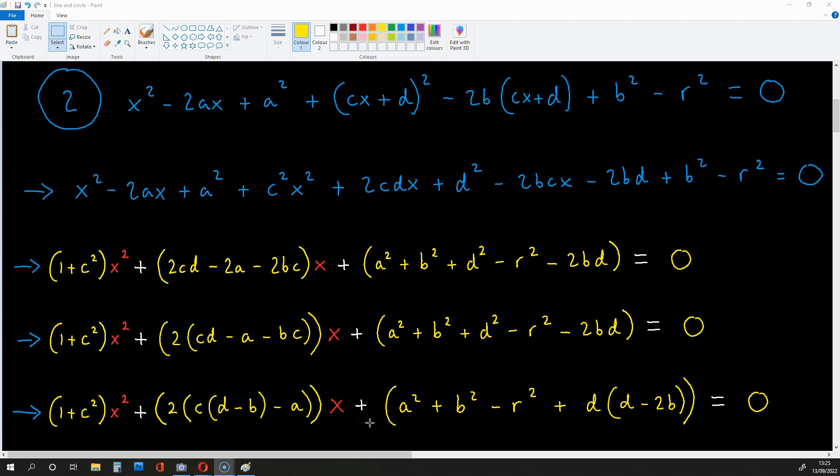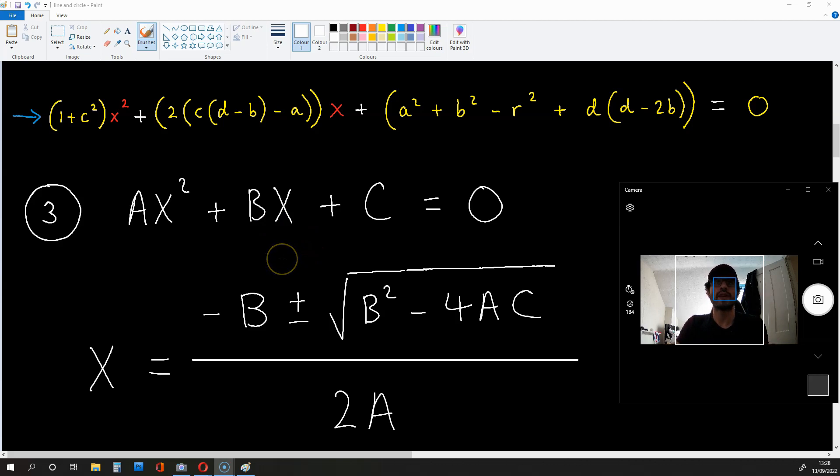The values of x produced will be the x coordinates of the intersections. Now we know with the quadratic formula, when we have an equation of the type Ax² + Bx + C = 0, x is going to be equal to (-B ± √(B² - 4AC)) / 2A.